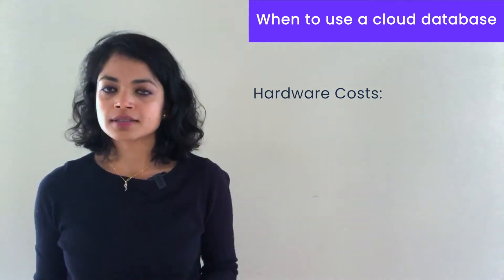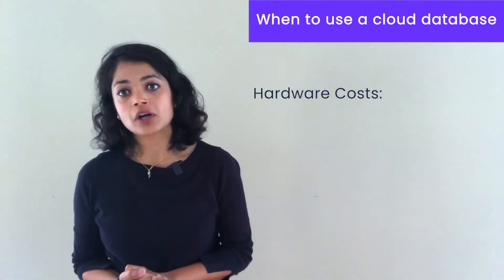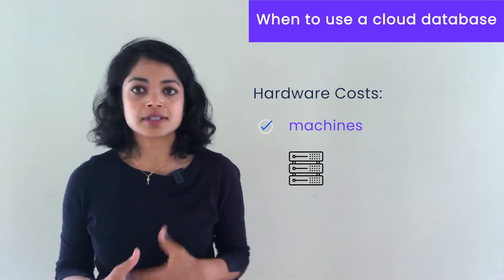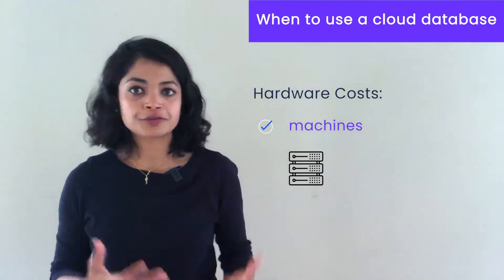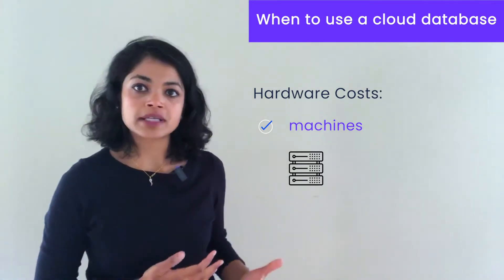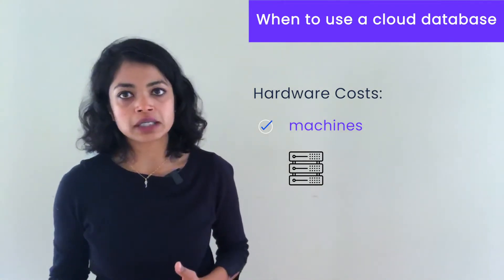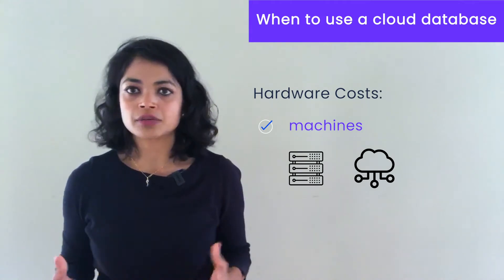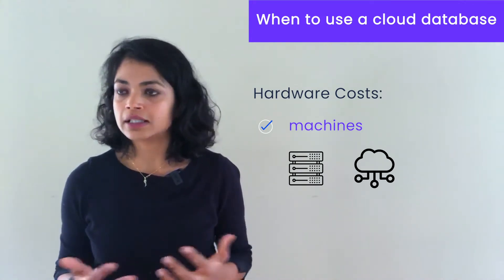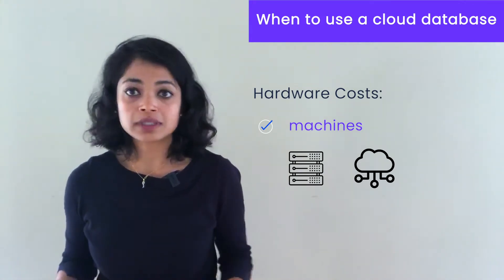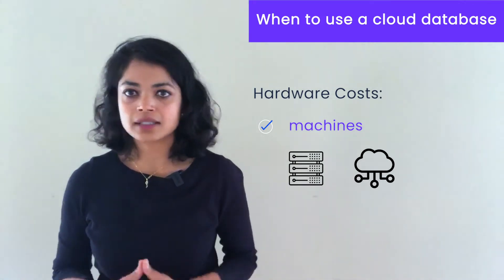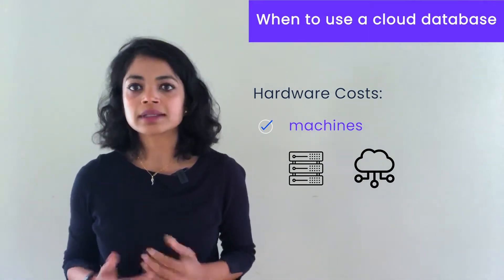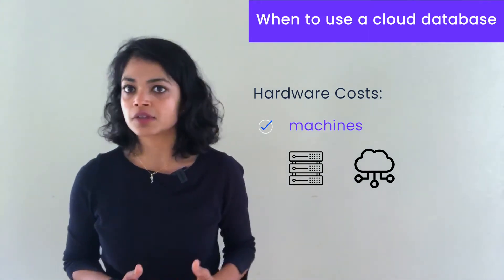Let's start with hardware costs. The first part is machines — servers. These are physical machines if you own a data center, or virtual machines if you're running on the cloud, such as EC2 instances, GCP N1 standard series. It really depends on what kind of machines you end up using for your workload.